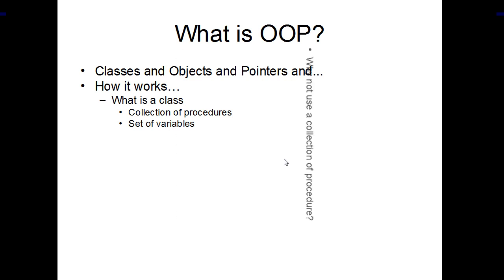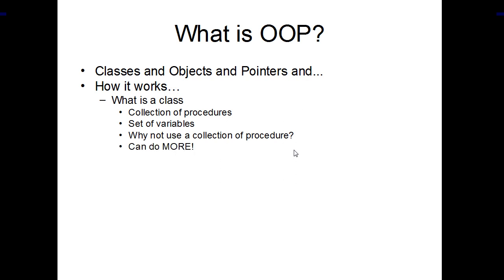So why not just use a collection of procedures? Well, the reason is that with a class, with objects, you can do more than with a collection of procedures. The first thing that you have to consider is that when you use variables in a collection of procedures, these variables are global and you have only one value in a variable at any given time. That's where the concept of objects comes around. When you have a class, you are going to declare as many objects of that class as you want, which means you will be able to have several variables of the same name, each one in a different object and with a different value.